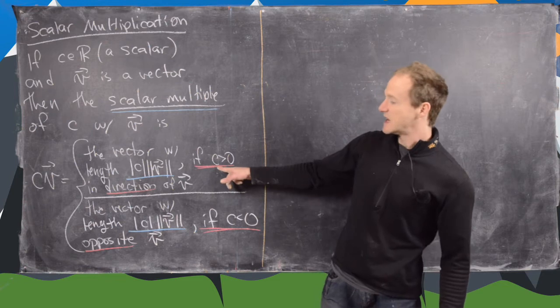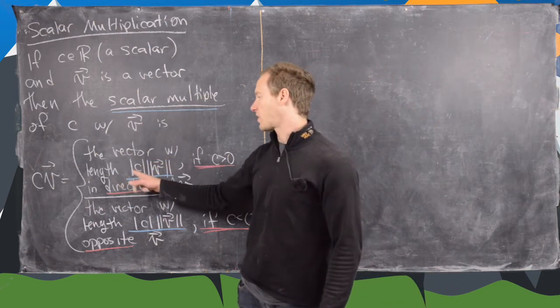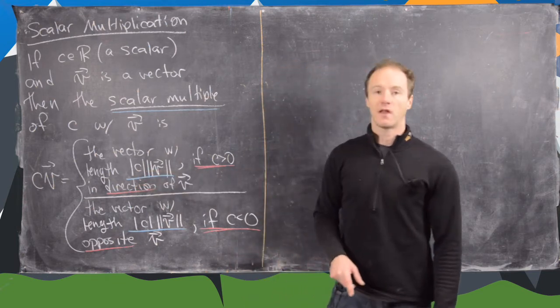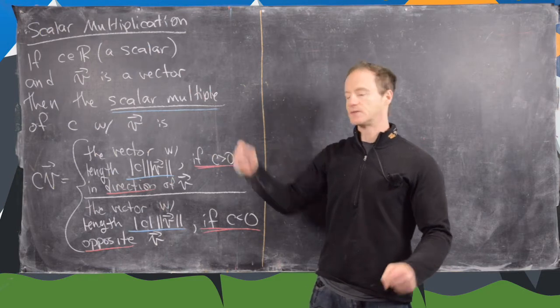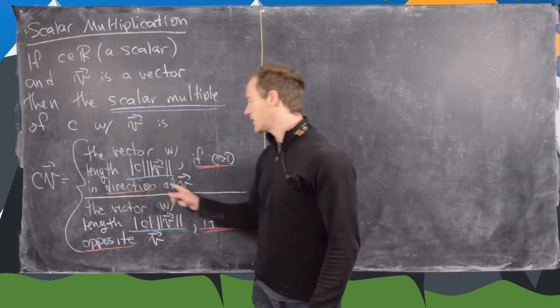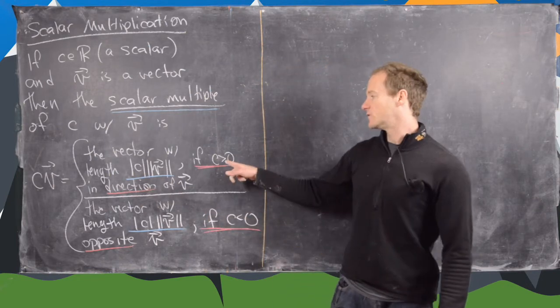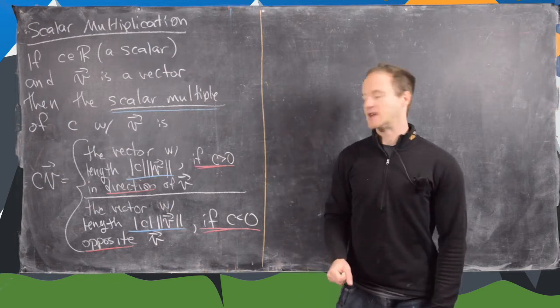So if c is bigger than zero, then it's the vector with length absolute value c times length v, so it scales the length of v. That's important and really motivates this word here. And it's in the direction of v. So notice if c is positive, then it maintains the direction of v, it just stretches it out.